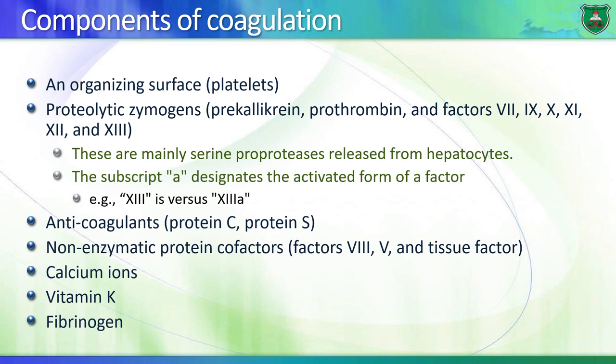There are a number of players in the process of blood coagulation. Some are small like calcium ions and vitamin K, others are large like platelets. You have proteolytic zymogens - enzymes that require proteolytic cleavage to be active, such as pre-kallikrein and prothrombin, as well as factors designated with Roman numerals: factors 7, 9, 10, 11, 12, and 13. These are mainly serine proteases released from hepatocytes. Once activated they are designated with the subscript A, for example factor 13A.